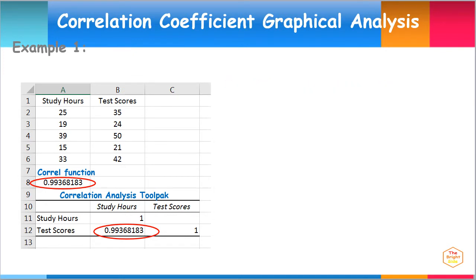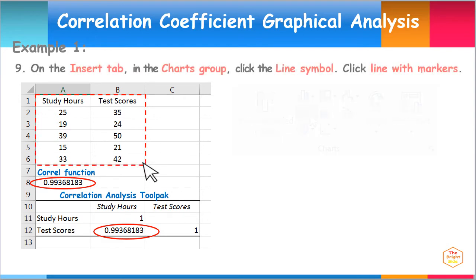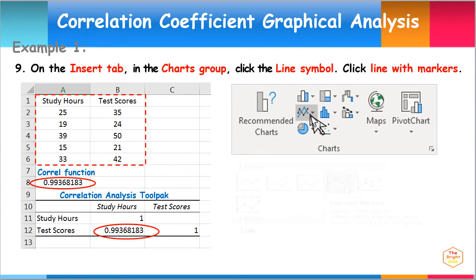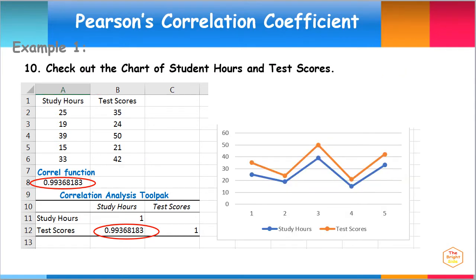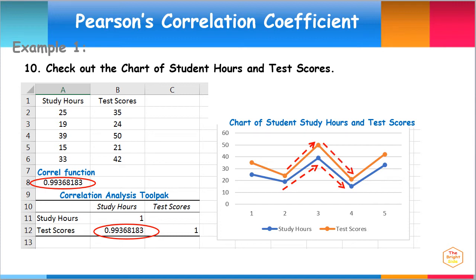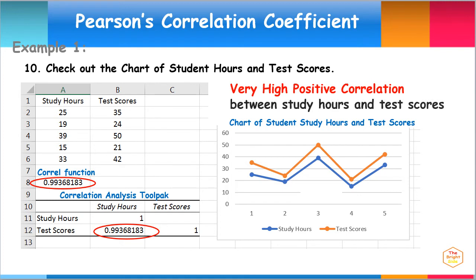We can also verify our conclusion through graphical analysis by using an Excel chart. First, select the cell range from A1 to B6. Then, on the Insert tab, in the Charts group, click the line symbol. Then click Line with Markers. Here is the chart of students' study hours and test scores. Notice from the line graph that as the study hours increases, the test scores also increases. Also, when the study hours decreases, the test scores also decreases. This verifies our conclusion of a very high positive correlation between study hours and test scores of the students.